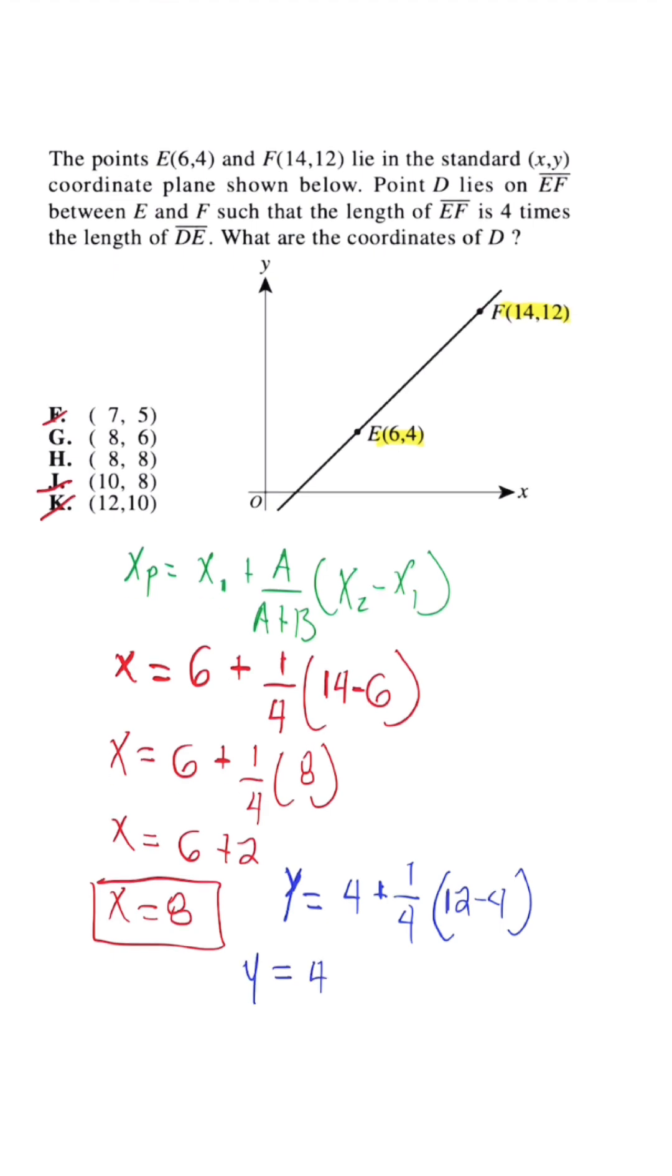So Y is equal to 4 plus 2, meaning Y is equal to 6. So the ordered pair that will make this a true statement for point D is going to be 8, 6.